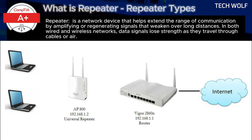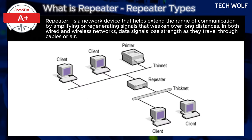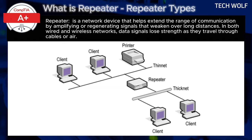Here is an example of repeater usage in wired networks. In wired networks such as Ethernet, a signal traveling along a cable will degrade after a certain distance — usually around 100 meters for CAT-5E or CAT-6 cables. If you need to extend the network further, a repeater can be placed along the cable to regenerate the signal, allowing the data to travel greater distances without loss of quality.